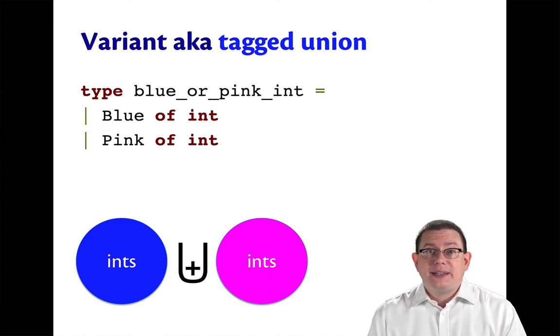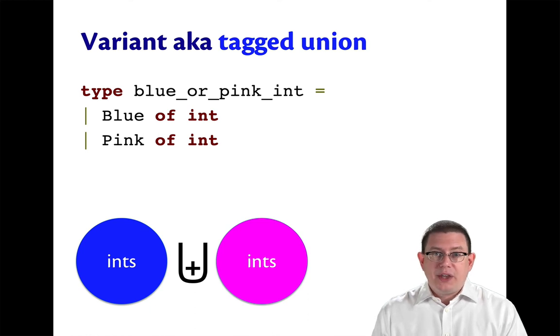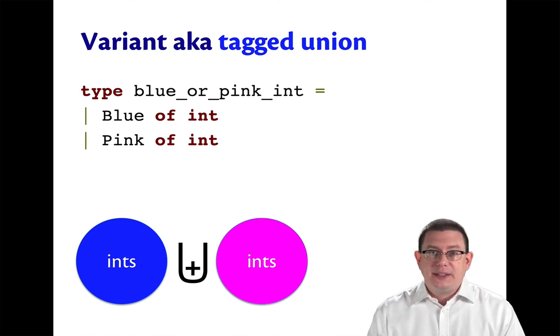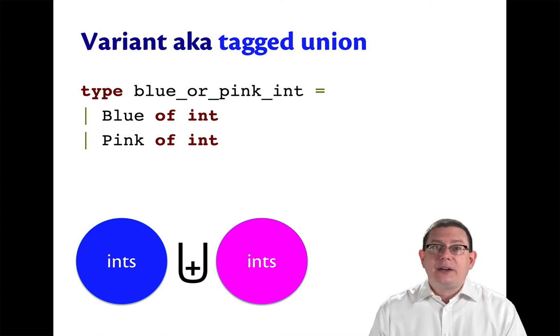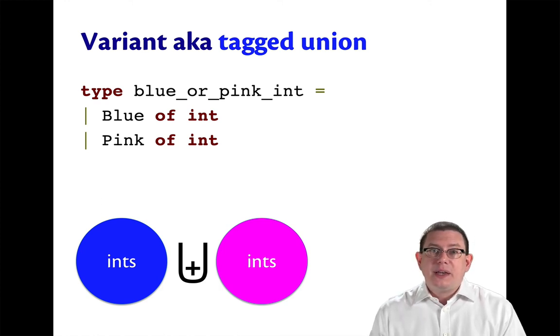This is known in mathematics as a tagged union. And it's written as a usual set union, but with a little plus sign inside of it. So that's what variants are. They are tagged unions because they tell us exactly which one of the sets the value came from.